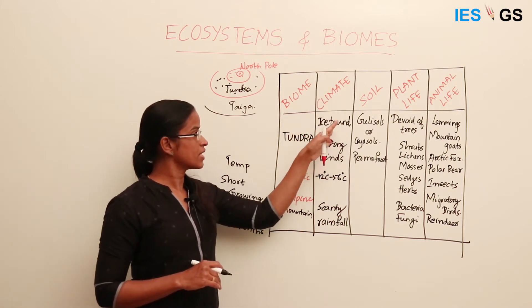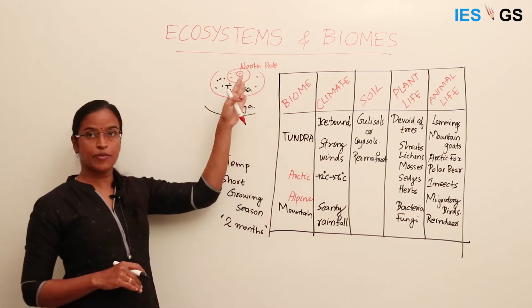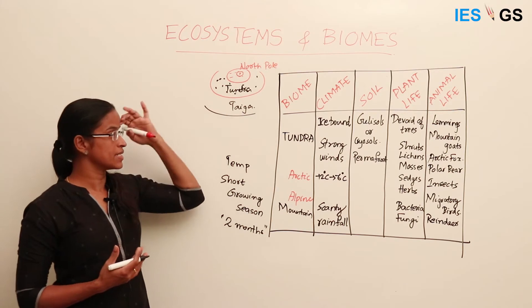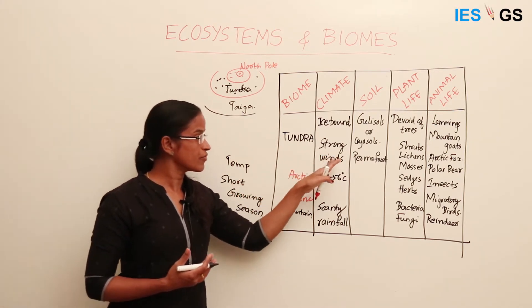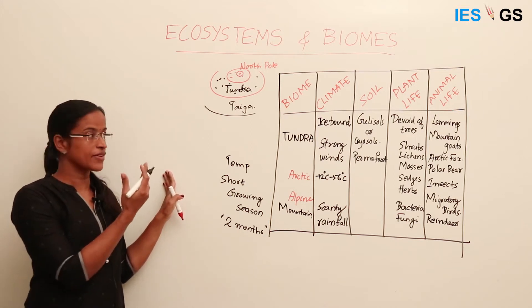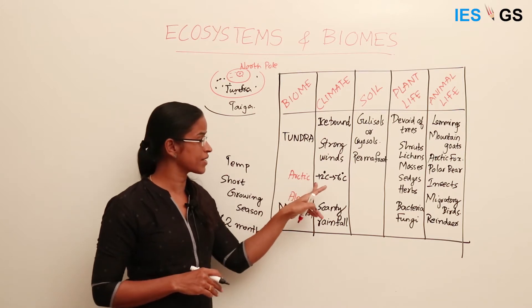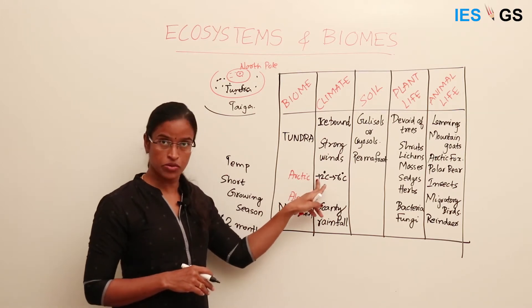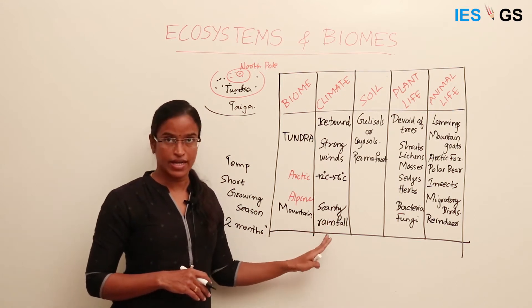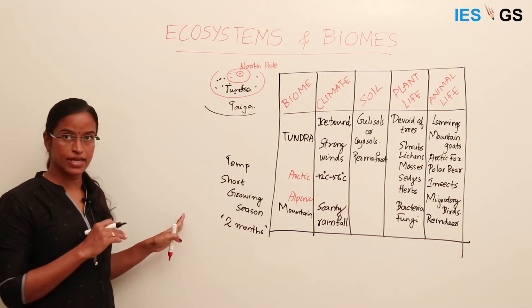The climatic features of the Tundra are: it is ice-bound, there are strong winds, polar vortex, and polar easterlies in this region. These strong winds also prevent the growth of higher plants, as they cannot survive in such strong winds. In the Arctic ecosystem, temperature can be as low as minus 12 degrees Celsius, and rainfall is very less. Both precipitation and temperature are low.